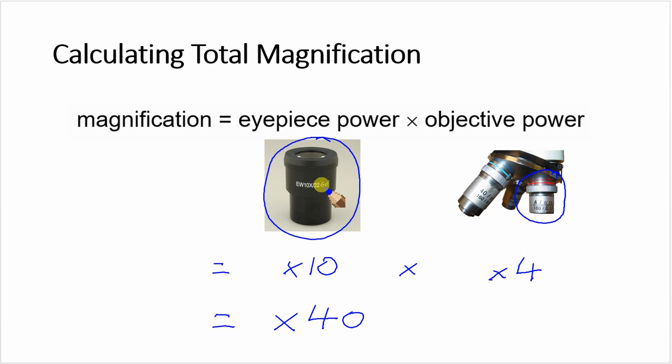All you need to do is multiply these two numbers: eyepiece lens multiplied by objective lens to find the total magnification. It's not any harder than that.